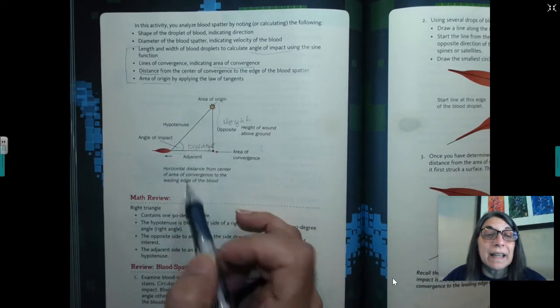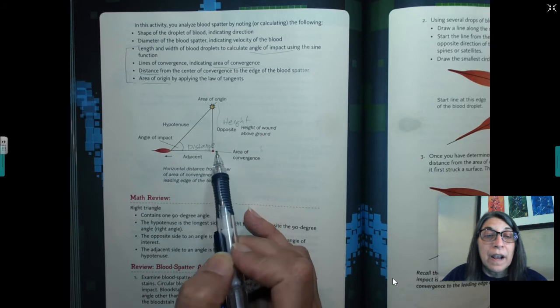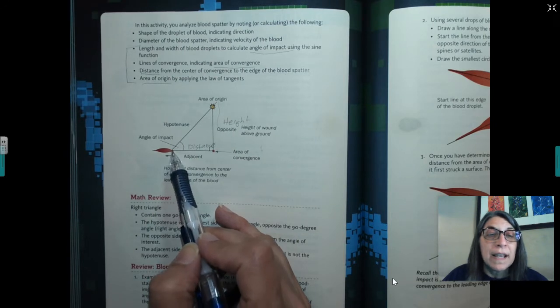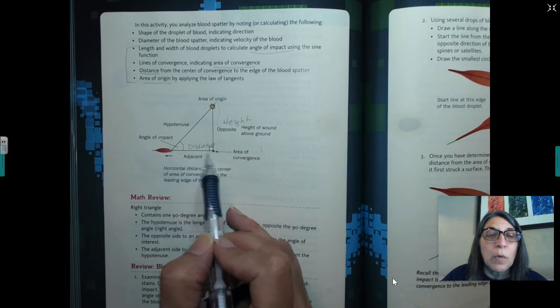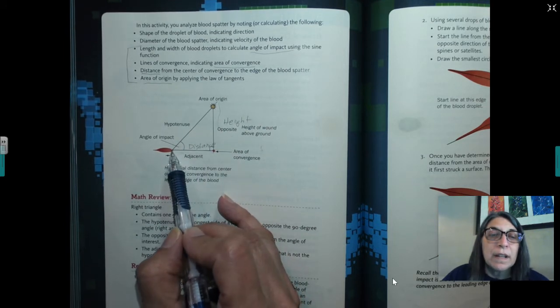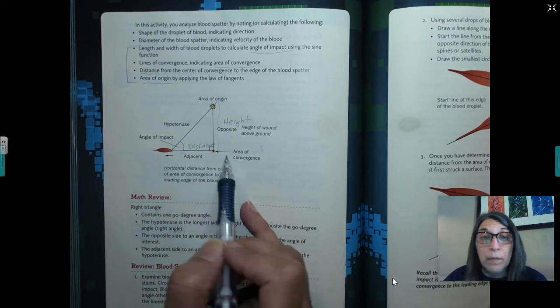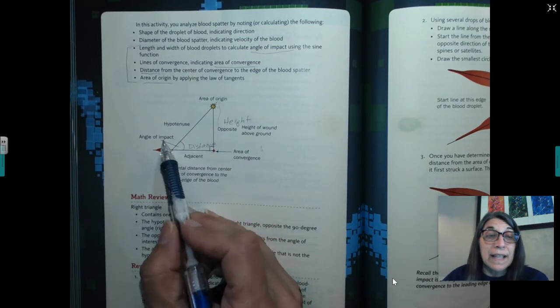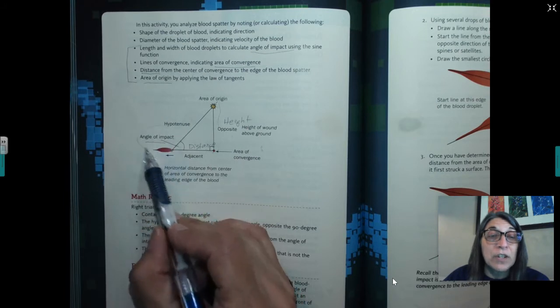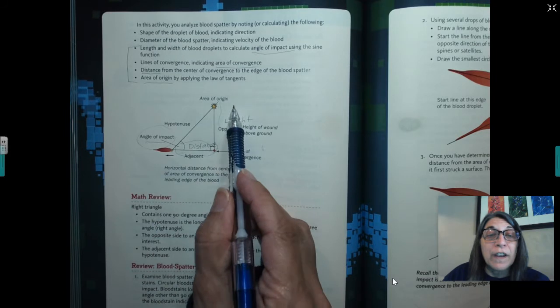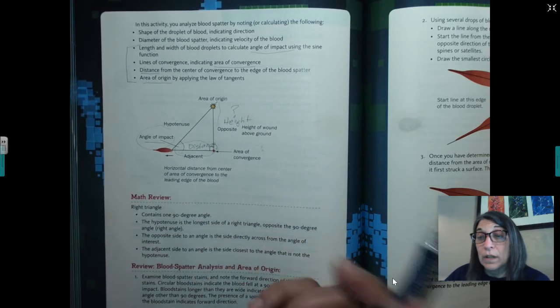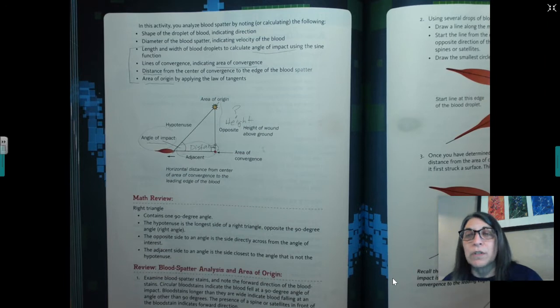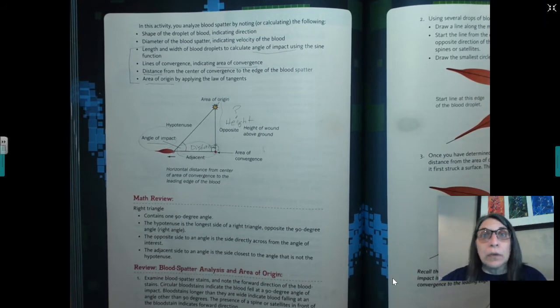We're actually going to call this the height. And we're going to call this the distance. So we're going to take this idea in math and we're going to use it to, if the area of convergence was here, what's the distance from the area of convergence to the very edge of the blood droplet where it first hit? Remember it hits here and then it just keeps going and leaves a tail. So this is the distance we want to know, the area of convergence to the edge of the blood droplet. That can be measured. Once you find the area of convergence, investigators can get out and measure this, but what they don't know is the height. And we can calculate this angle because we learned how to do that. So we can find this information, we can get this information. And then the goal is to figure out the height. And so we're going to use some trig to figure that out.